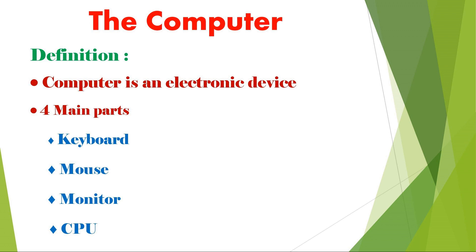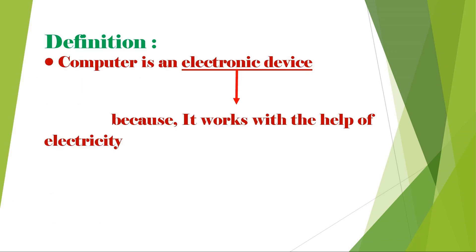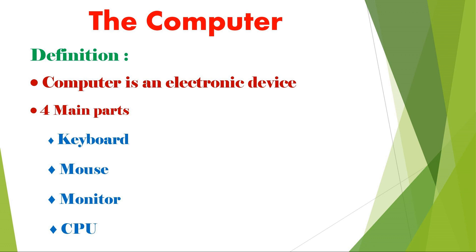Yes, we all know that a computer is an electronic device. Do you know why it is called an electronic device? Because the computer works with the help of electricity. That is why the computer system is called an electronic device or electronic machine.